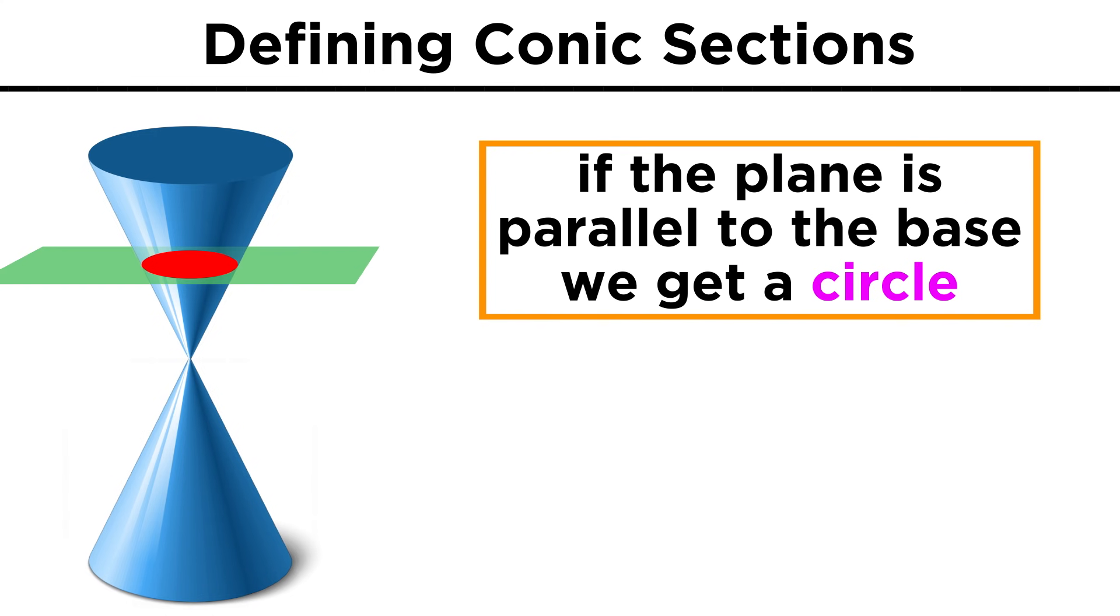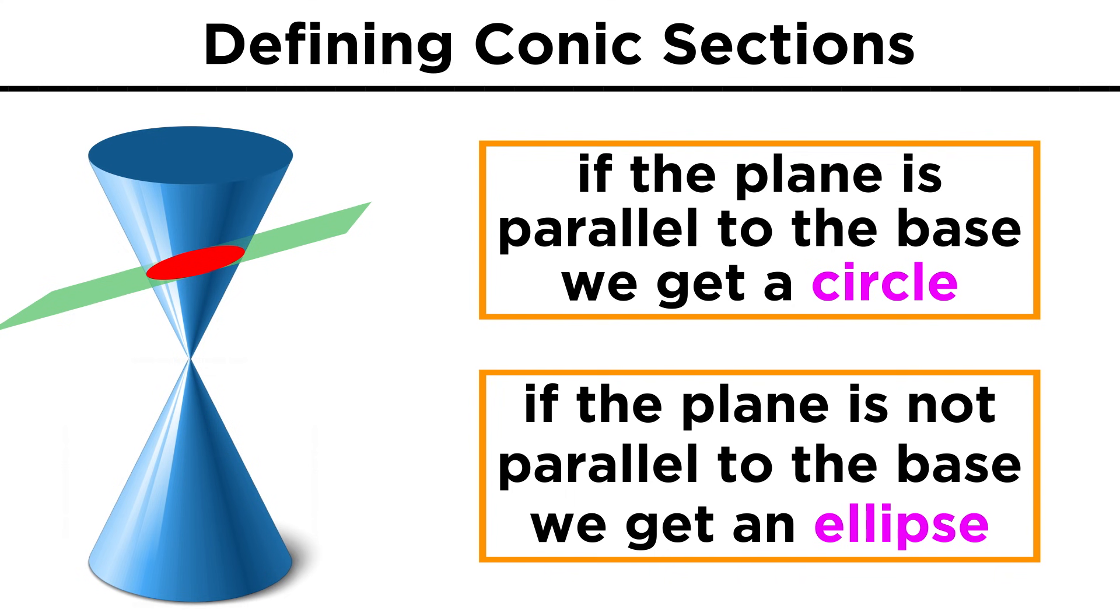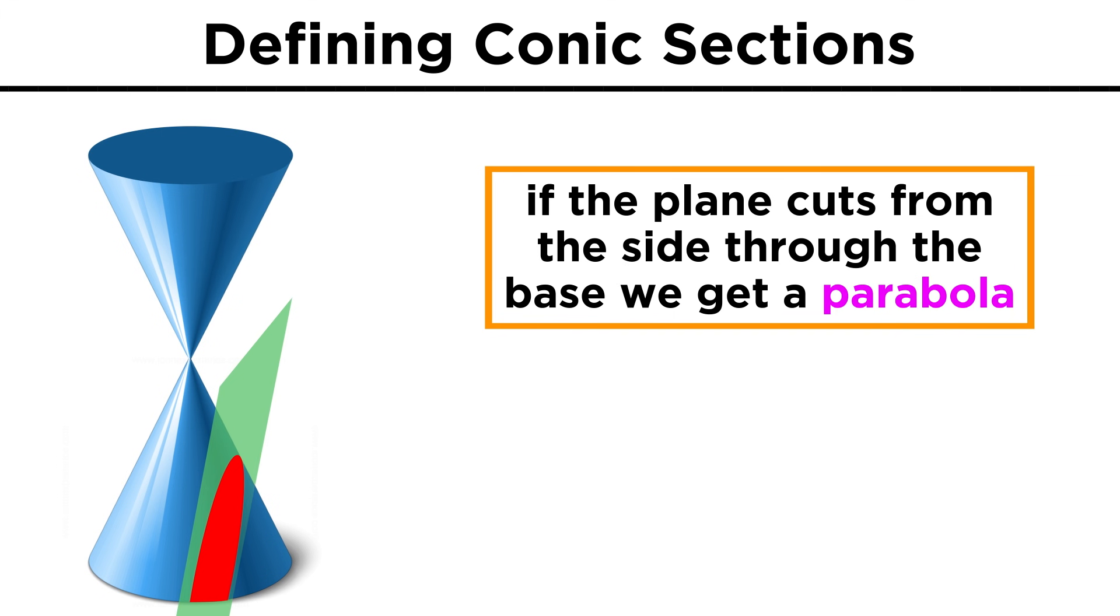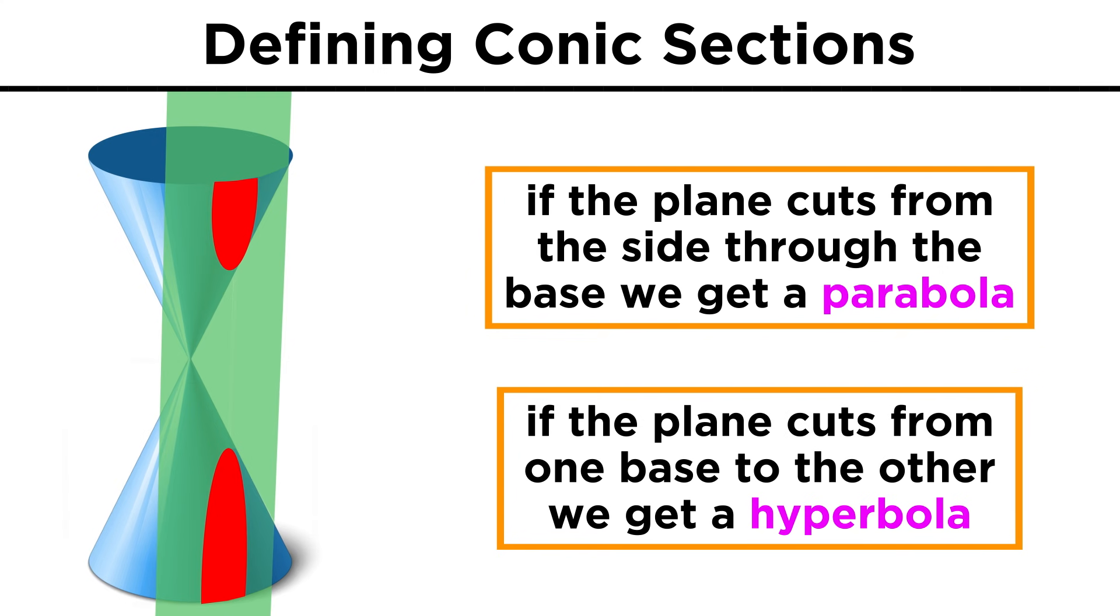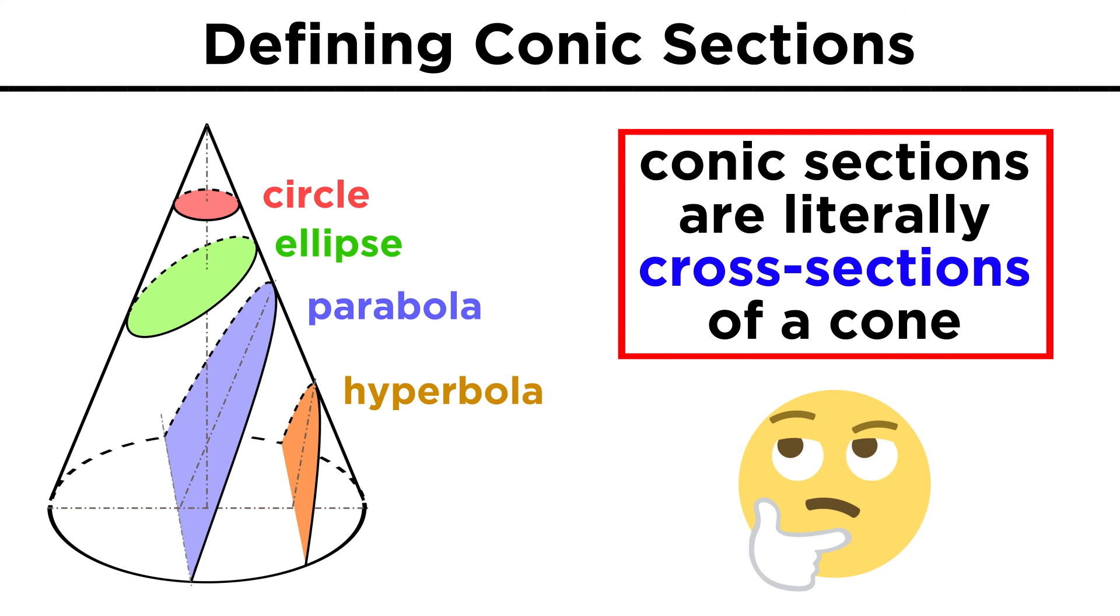If the plane goes from one side of the cone to the other and is parallel to the base, we get a circle. If the plane does the same thing but is not parallel to the base, we get an ellipse. If the plane cuts from the side of the cone down through the base, we get a parabola, and if the plane cuts all the way from one base to the other, we get a hyperbola. So these are called conic sections because they are literally different cross sections of a cone.